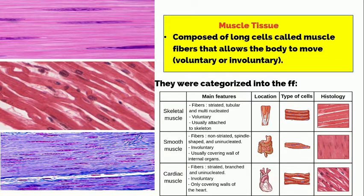And lastly, cardiac muscle cells. The cardiac muscle is striated, branched, and uninucleated. It is also involuntary and only covers the walls of the heart.